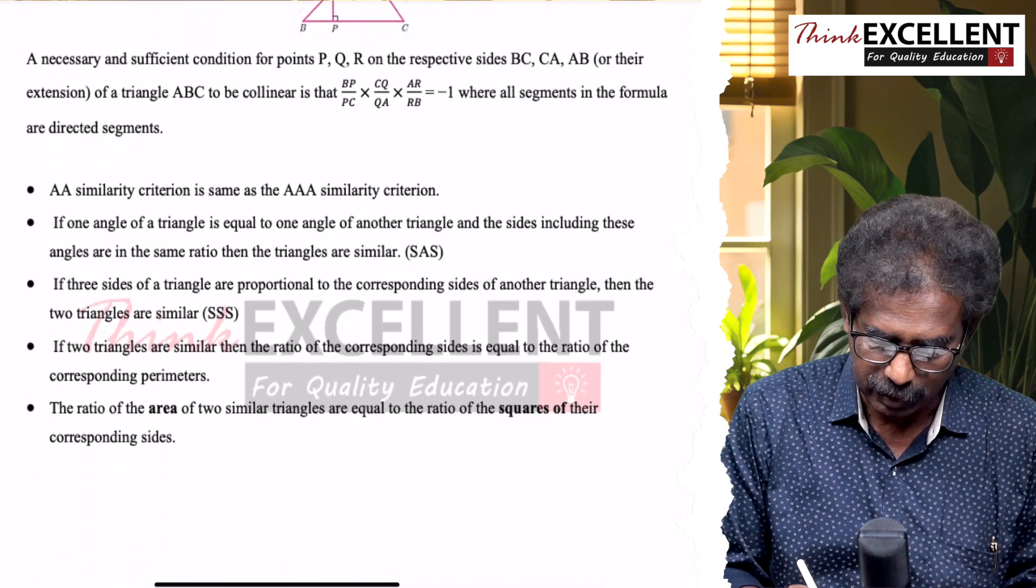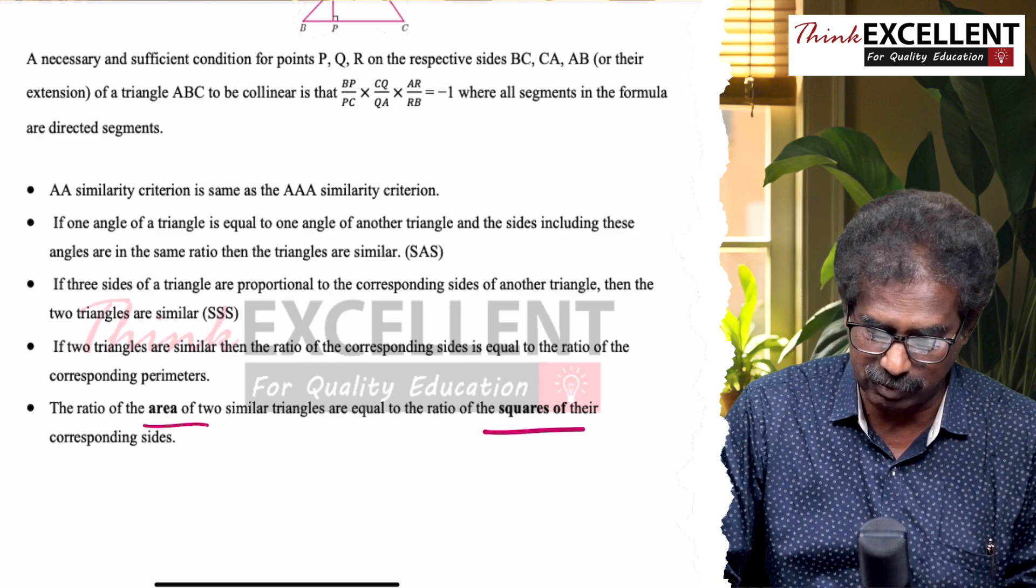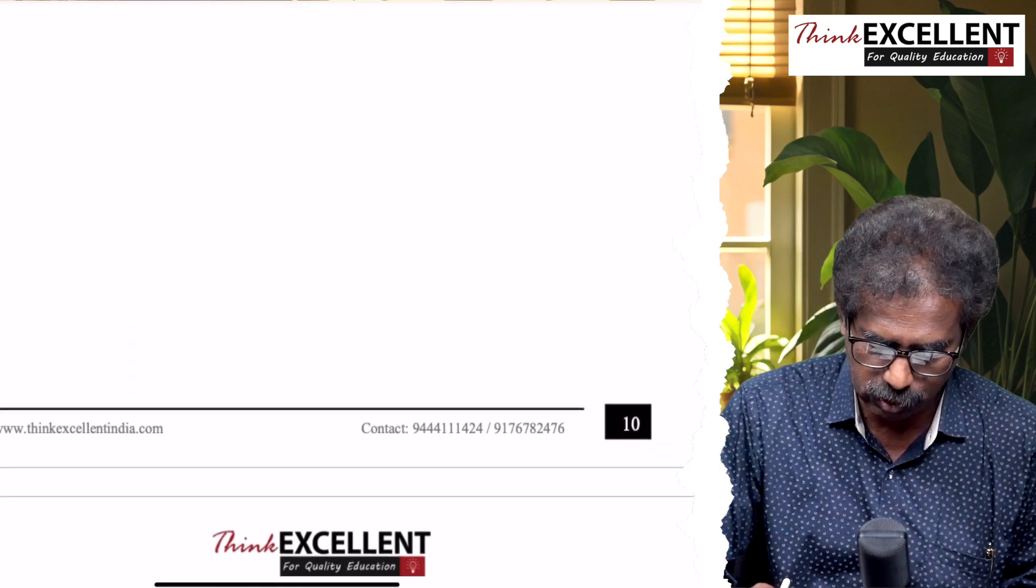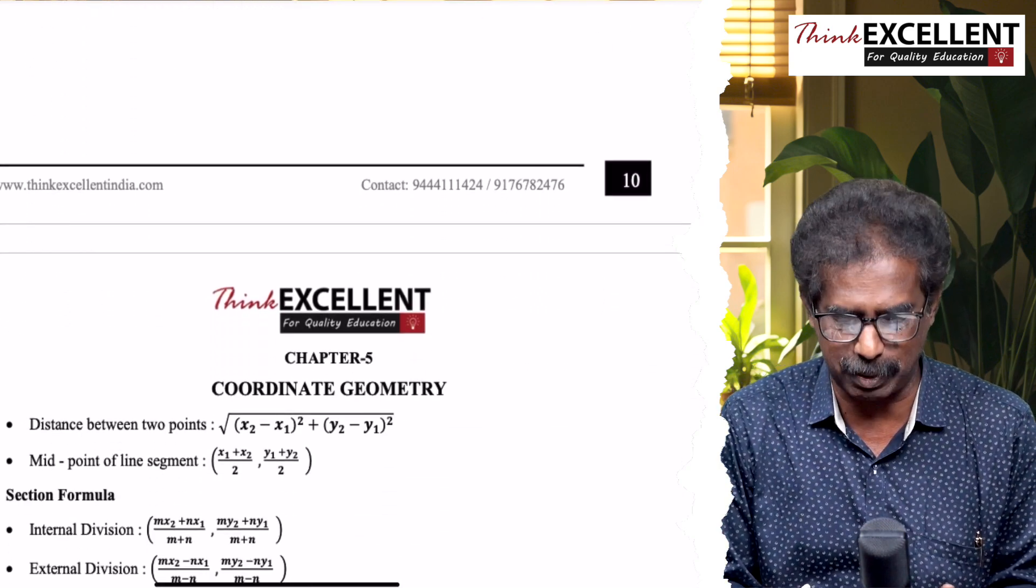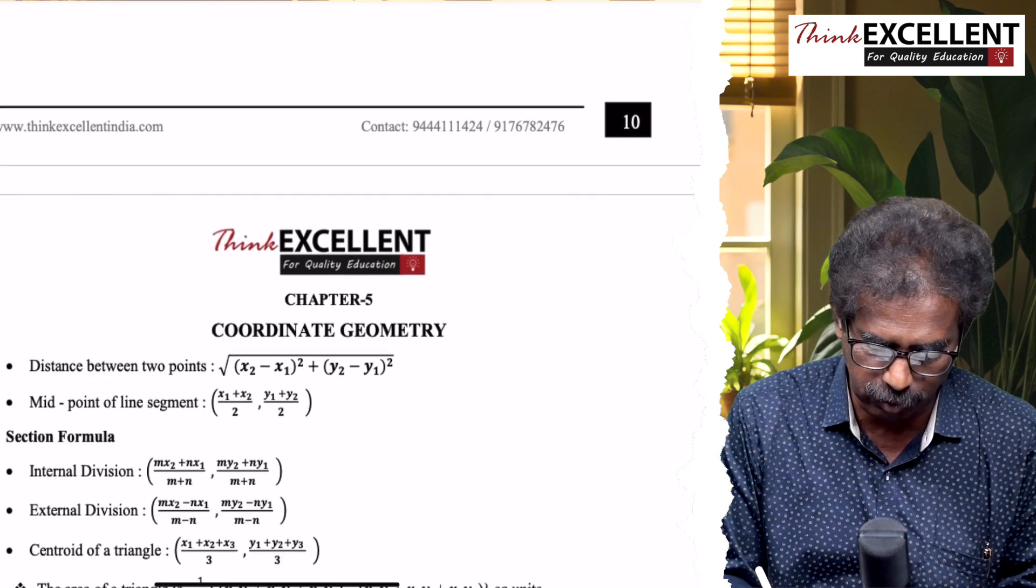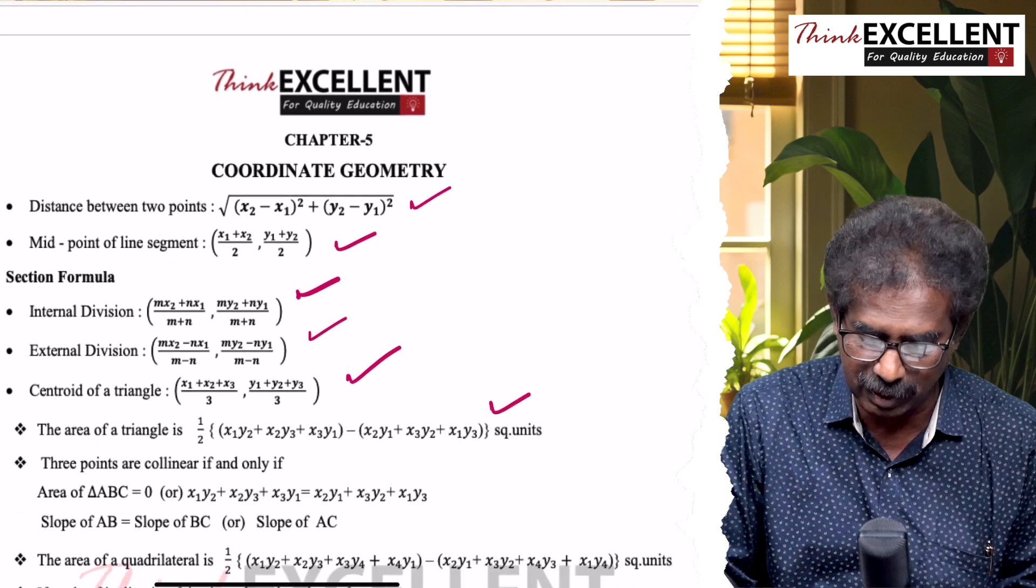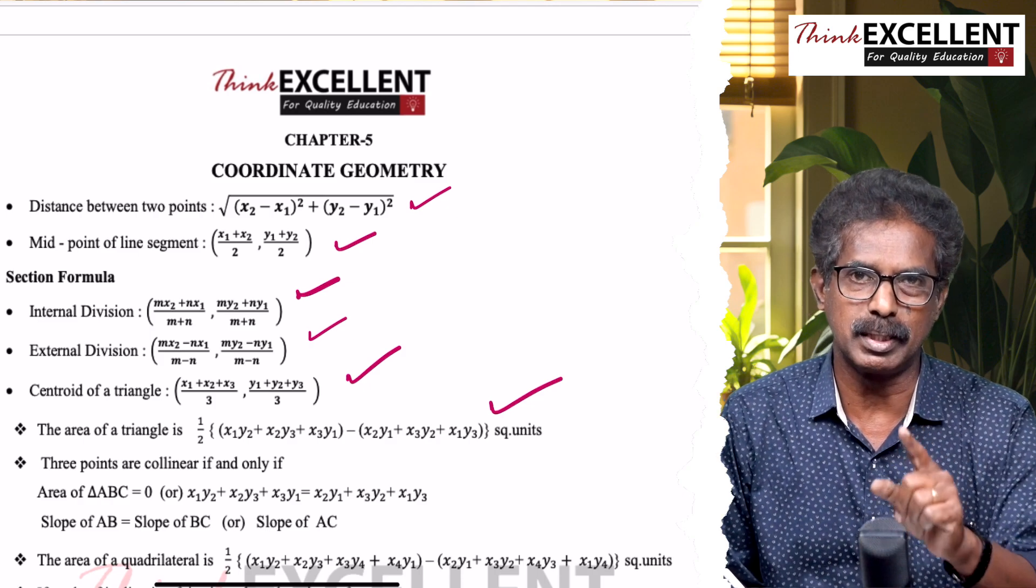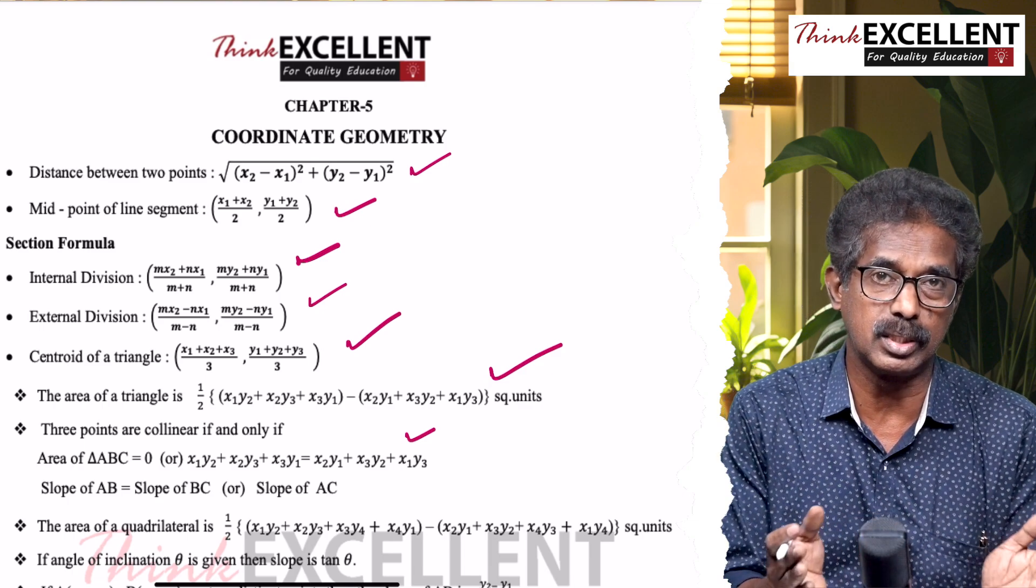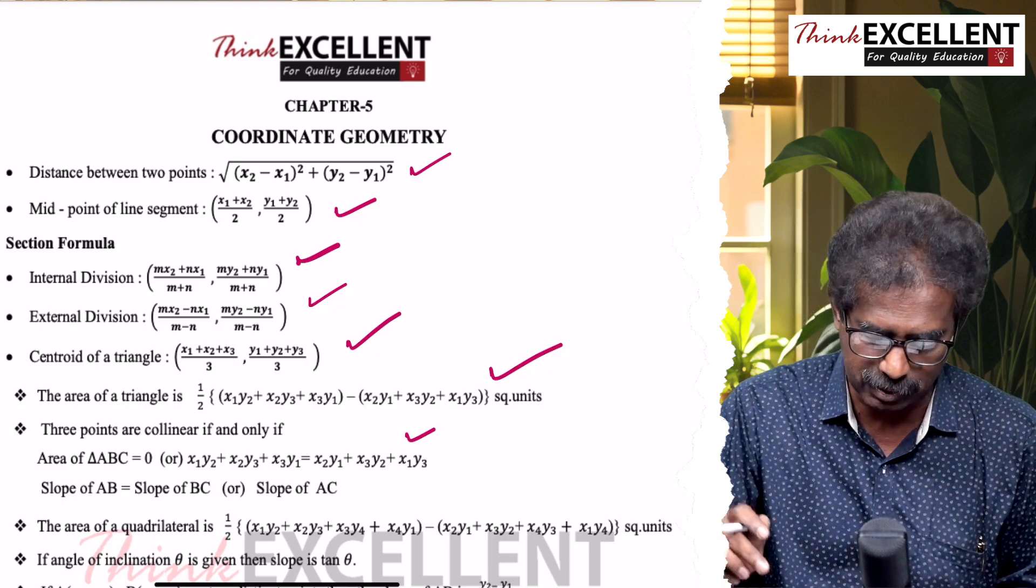Some results: in similar triangles, areas proportional to square of the corresponding sides. That is very important. Corresponding sides are proportional to perimeters, to areas square of the area. Chapter number 5, very simple chapter: coordinate geometry. Distance formula - distance between two points, midpoint formula, section formula: internal division, external division, centroid, area of a triangle. Then collinearity: area of the triangle is zero, slope of AB equal to slope of BC and B is common - you say the points are collinear.